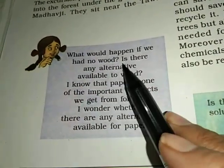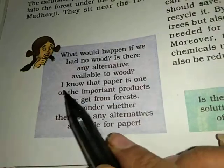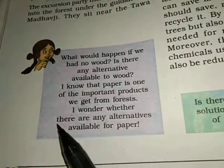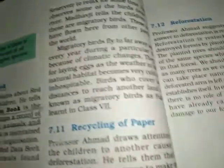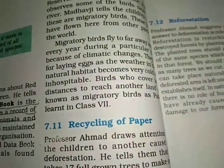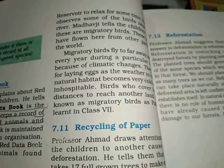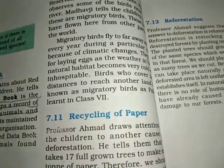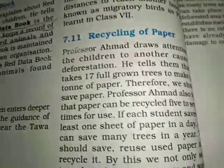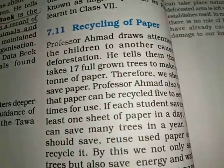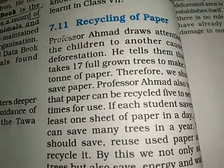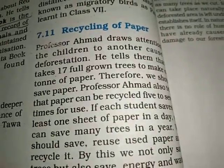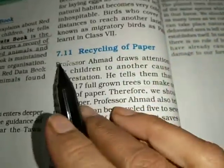What would happen if we had no wood? Is there any alternative available to wood? Paper is one of the most important products we get from forests - I wonder whether there are any alternatives available for paper. The more paper is made, the more trees are cut. That is why we say save paper too - the more paper you save, the more trees will be saved. Because paper is made from the bark of trees. In fact, we should recycle - paper that has been used can be recycled many times, up to 15 to 17 times. The ink can be removed and it can become plain paper again. So that should be done. Recycling of paper will save a lot of trees.